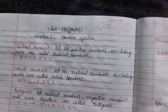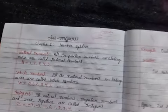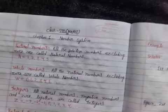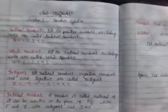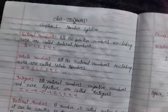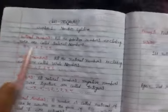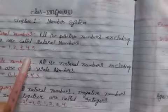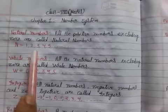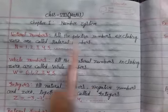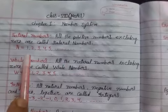Good morning students, today we're going to discuss Chapter 1: Number System of Class 8. Before discussing the chapter, we need to know the definition of the following numbers. First is Natural Number. What is a natural number? All the positive numbers excluding zero are called natural numbers. It is denoted by N.